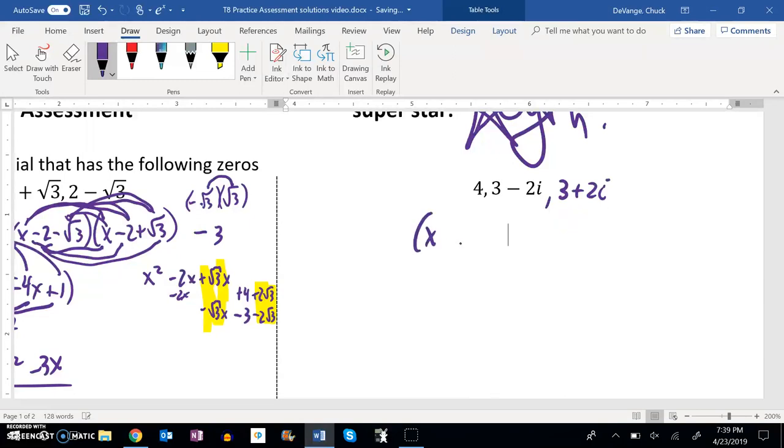So I have x minus 4, x minus this, so 3 plus 2i, and x minus this, so 3 minus 2i, subtracting the whole thing. Now, if you wanted, you could do the sum pairwise and product and get it this way. I'm going to multiply it out. So I'm going to multiply these two together first and then worry about that.